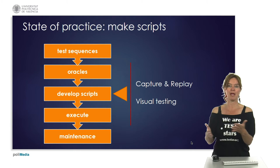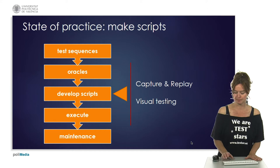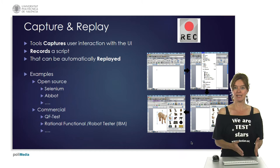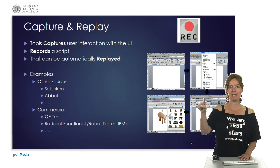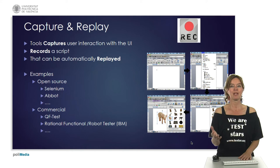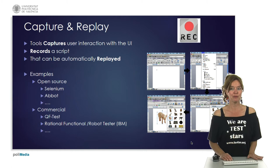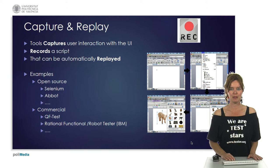The state of the art is capture-replay and visual testing. Capture-replay tools, as the name indicates, capture user interaction and make scripts to replay it. A tester executes a test sequence manually once, and while doing so the tool records a script that can later be replayed for automation. Examples of open-source capture-replay tools include Selenium and Abbot, and on the commercial side there are tools like QF-Test, Rational Functional Tester, and Robot Framework, among many others.